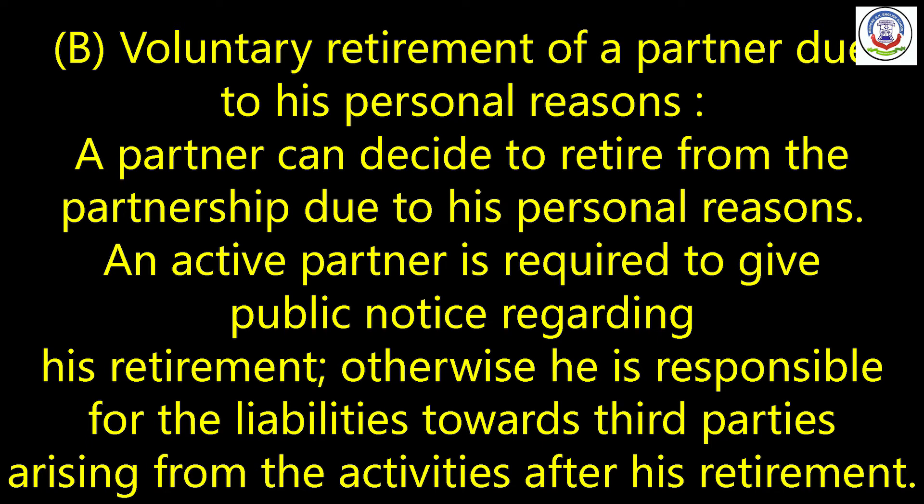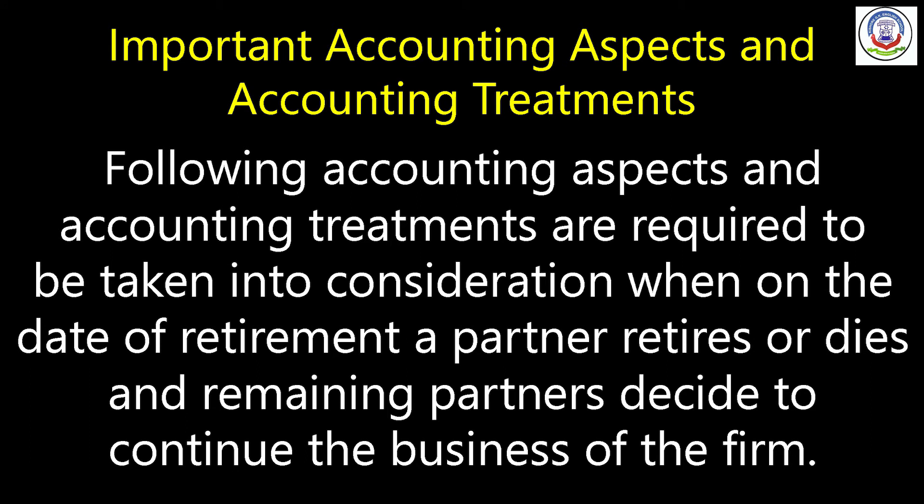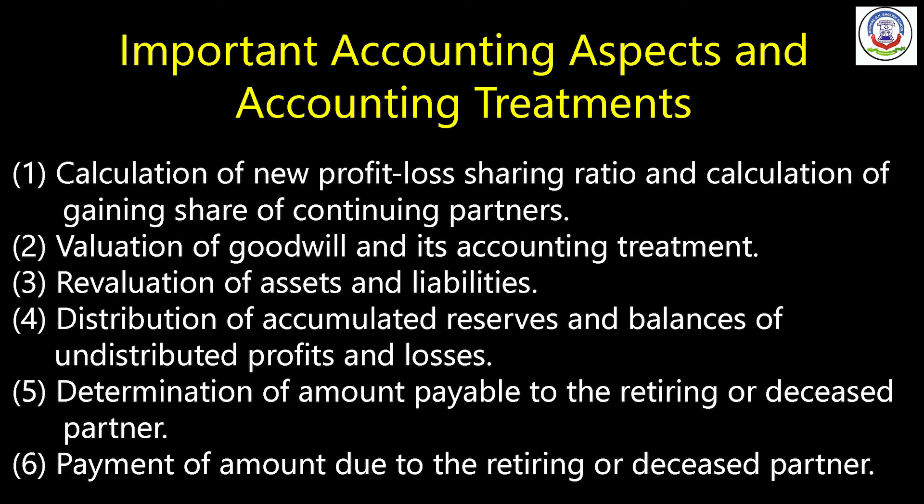Our next point is important accounting aspects and accounting treatments. The following accounting aspects and treatments are required to be taken into consideration when, on the date of retirement, a partner retires or dies and the remaining partners decide to continue the business of the firm. First: calculation of new profit and loss sharing ratio and calculation of gaining share of continuing partners. Next: valuation of goodwill and its accounting treatment.